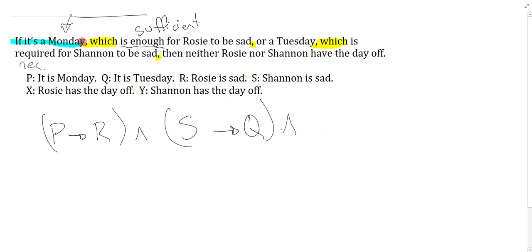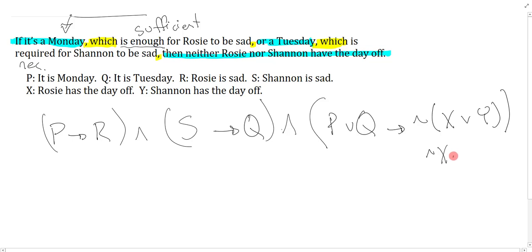Now what I have left is if it's a Monday or Tuesday then neither Rosie nor Shannon have the day off. This is how you want to symbolize non-restrictive clauses - do the non-restrictive clause first and then read the rest of the sentence without those comma which clauses. If it's a Monday or a Tuesday P or Q then neither Rosie nor Shannon have the day off - it's not the case that Rosie has the day off or Shannon has the day off. You could have used the alternate form of the neither nor perfectly fine.